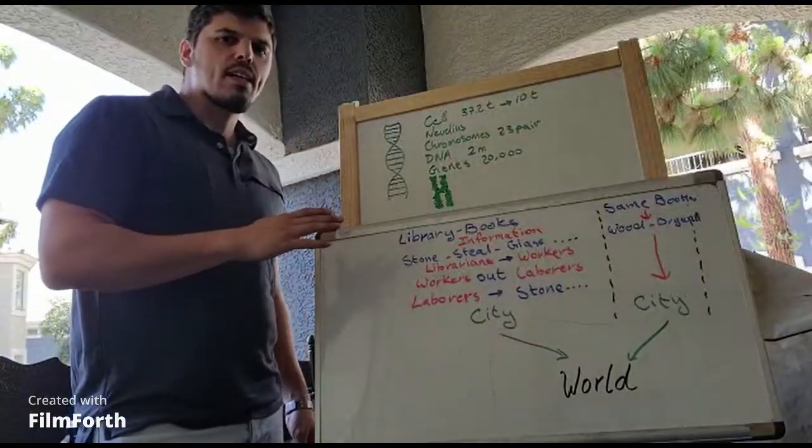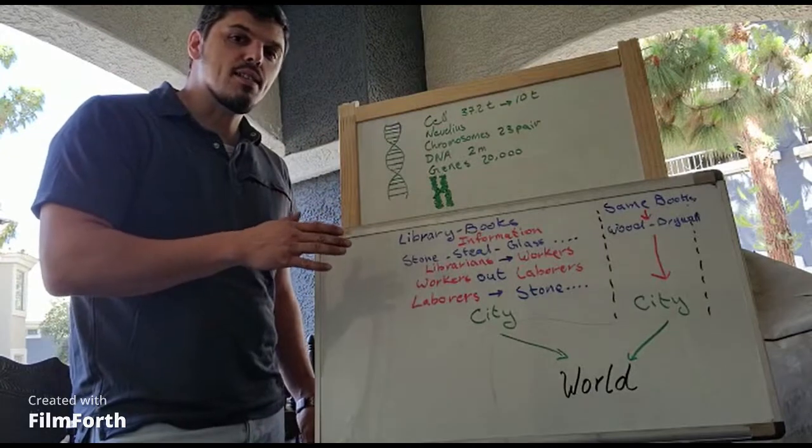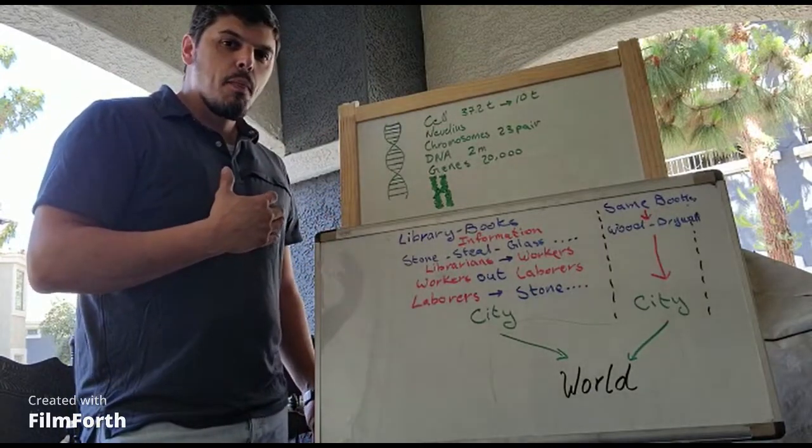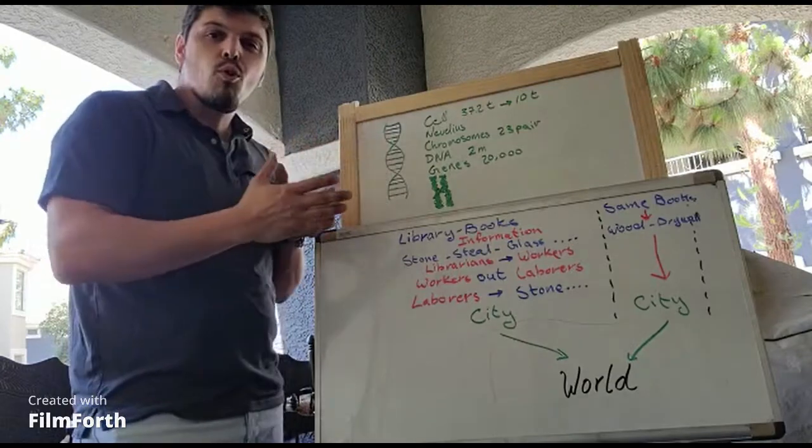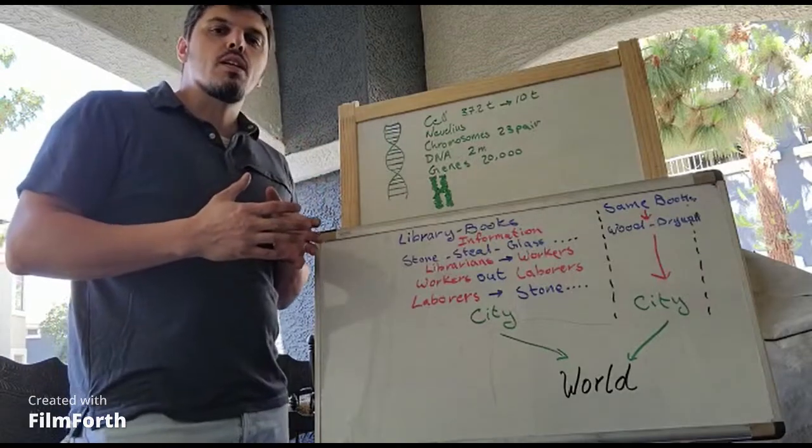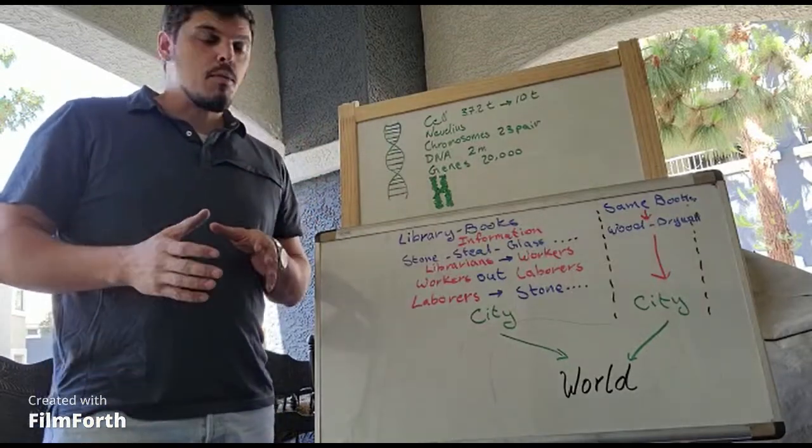Alright, so I'm going to take a second look at how to prove God exists, and we're going to look specifically at our own bodies. We have about 37.2 trillion cells in our body. About 10 trillion of those cells have DNA in them.